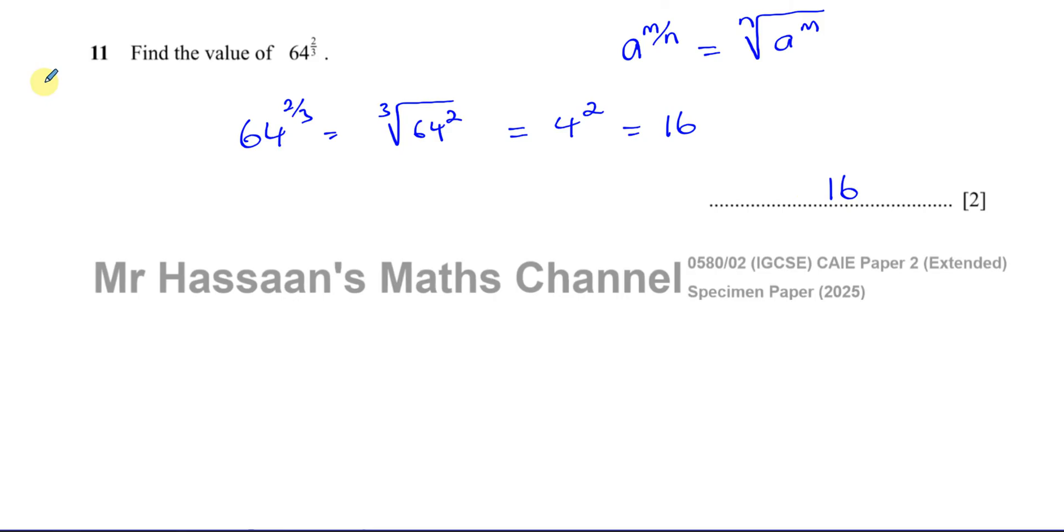We should know our square numbers: 1, 4, 9, 16, 25, 36 and so on. And cube numbers: 1 cubed is 1, 2 cubed is 8, 3 cubed is 27, 4 cubed is 64, 5 cubed is 125. If we know further than that, that's even better. For square numbers you should know 49, 64, 81, 100, 121, 144.